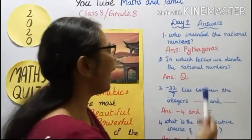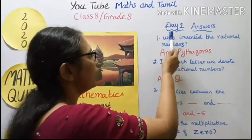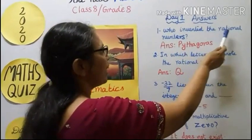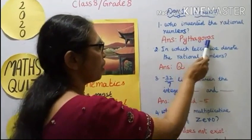Now I will tell the answers for Day 1. First question: Who invented the rational numbers? Answer: Pythagoras.